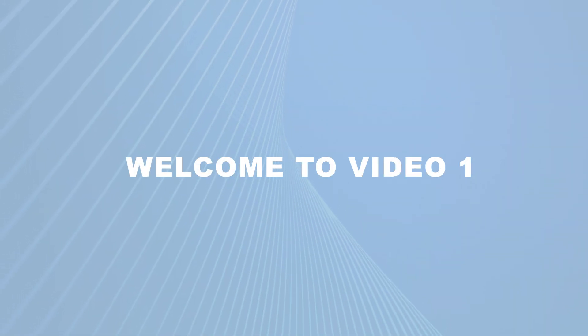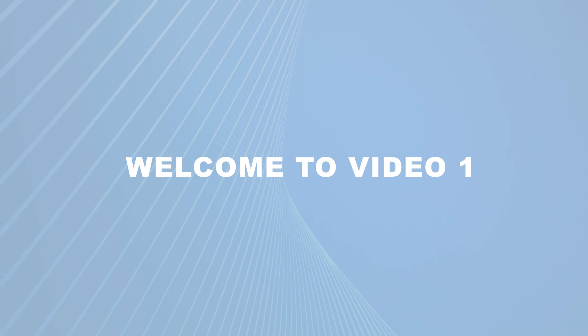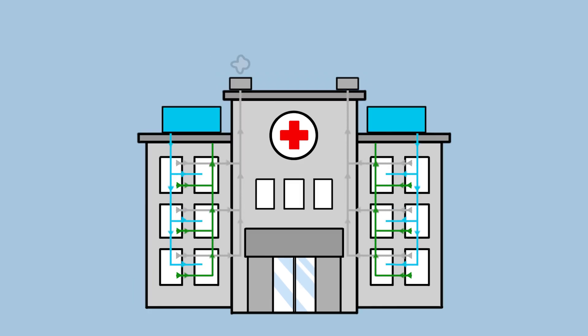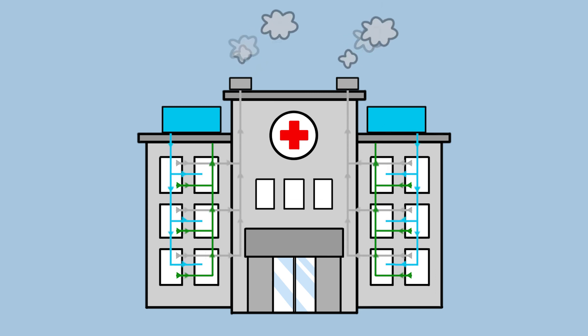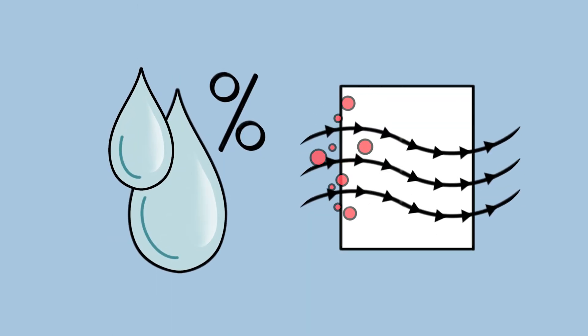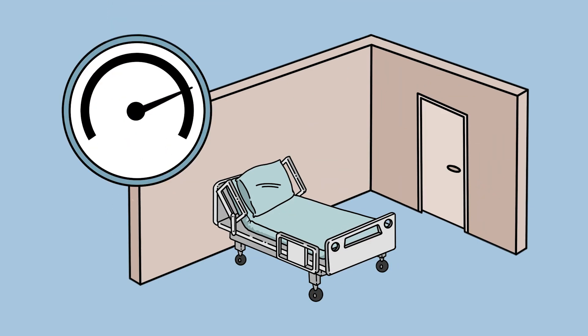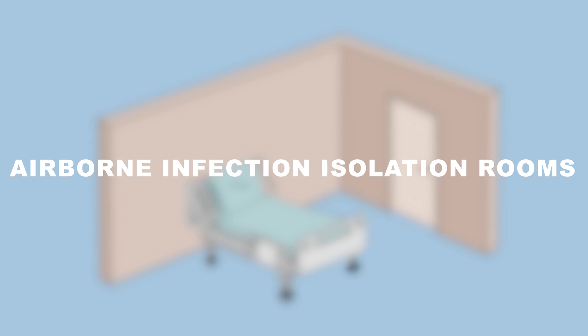Welcome to video one in our Project First Line series on creating negative pressure rooms and areas. Today's HVAC systems have drastically improved the thermal comfort of patients, staff, and visitors within healthcare facilities, but the importance of HVAC systems extends far beyond just thermal comfort. HVAC systems have an important role to play in keeping germs from spreading, and they also control humidity, indoor air quality, and pressure relationships between individual rooms, such as a facility's airborne infection isolation rooms, or AII rooms for short.